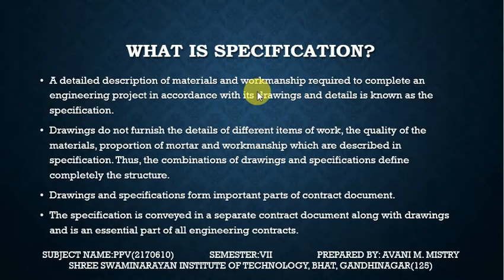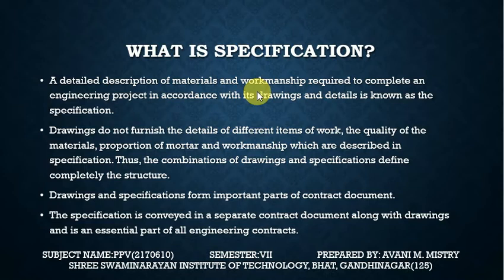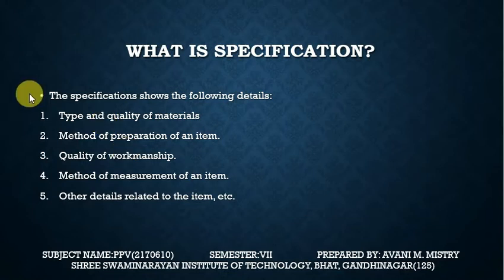Drawings and specifications form the important parts of the contract documents. The specification is conveyed in a separate contract document along with the drawings, and it is an essential part of all engineering contracts. For example, if a contract or tender is to be passed, it must specify how different items like RCC or DPC are to be constructed, their proportions and thickness — that is called specification.